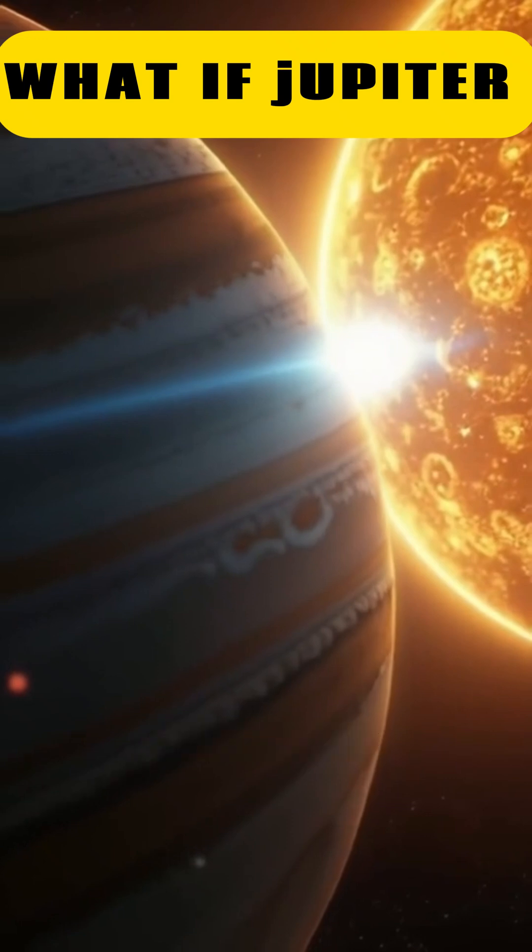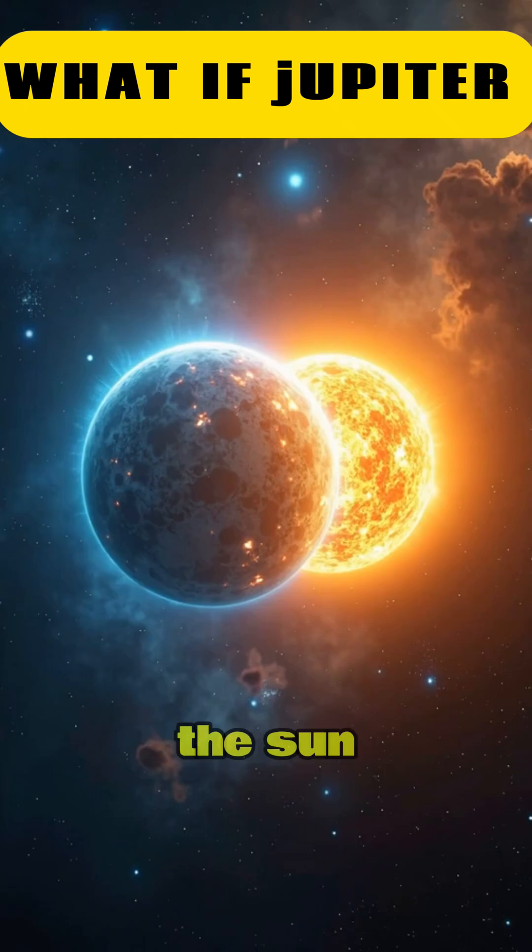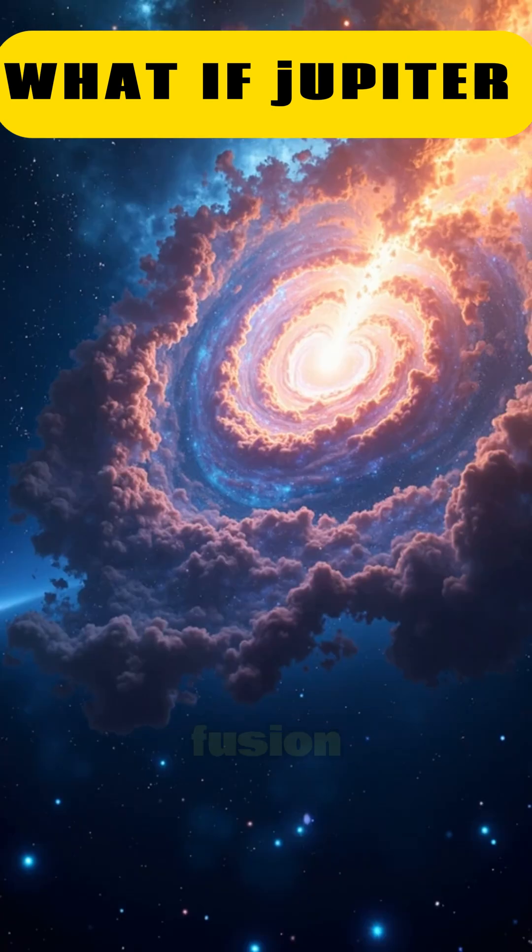Jupiter is almost a star. It's made of hydrogen and helium, just like the sun. But here's the catch. It's 80 times too small to trigger nuclear fusion.